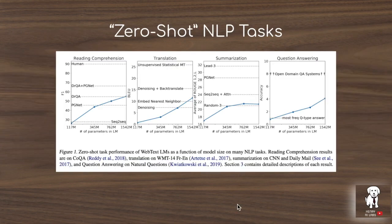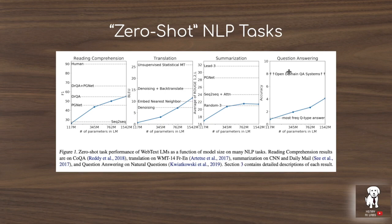The next idea in GPT-2 is zero-shot NLP tasks. In this context, zero-shot describes performing tasks like reading comprehension, translation, summarization, and question answering without any training on those tasks — the model isn't familiar with the task. Rather, they prompt it with different inputs that cause the language model to perform these tasks, all within the same auto-regressive language modeling framework.